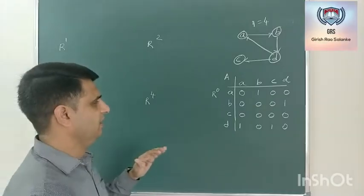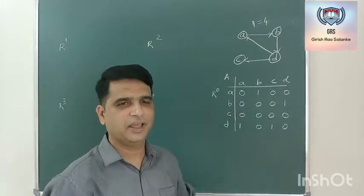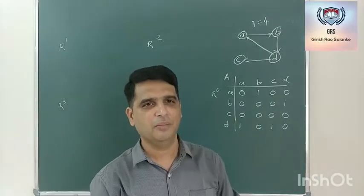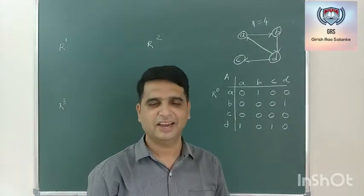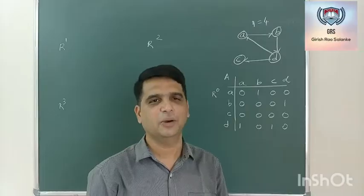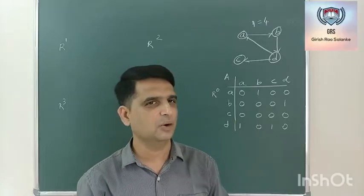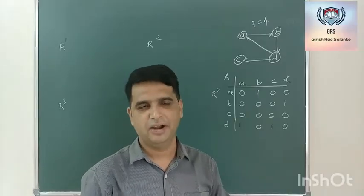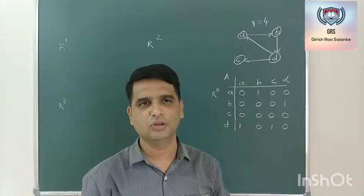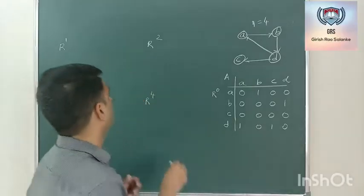Let me denote this adjacency matrix with variable R, R naught. Let R naught be the initial adjacency matrix. As there are 4 vertices, I will have 4 iterations — this is almost similar to Floyd's algorithm. The first iteration is denoted R1, second iteration R2, third iteration R3, and last iteration R4. In the first iteration, I take the first row and first column as reference; second iteration, second row and second column; third iteration, third row and third column; and fourth iteration, fourth row and fourth column.